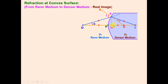Three angles are considered: alpha is the angle at point object O, beta is the angle at the image, and gamma is the angle at the center of curvature. R is the radius of curvature, u is the distance of the object from the pole, and v is the distance of the image from the pole.